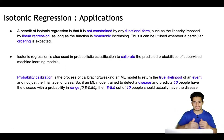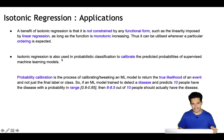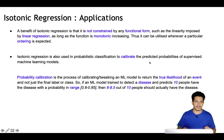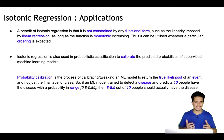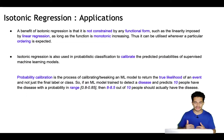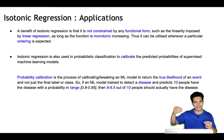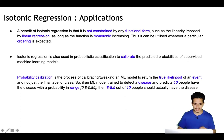Isotonic regression is also used in probabilistic classification to calibrate the predicted probabilities of supervised machine learning models. Interestingly, I came across isotonic regression because of this use case. What is probability calibration? It's a process of calibrating the ML model to return probabilities which are the true likelihood of the event.